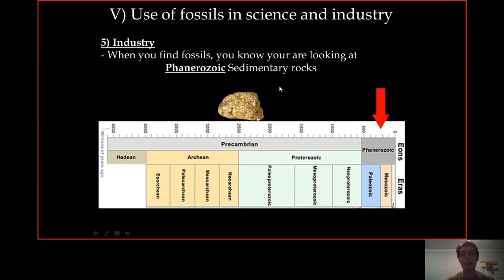So if you just found a fossil in your rock — a seashell, for example — you know you're most likely looking at the Phanerozoic. Which means you won't find that very sweet gold nugget. Because in South Africa particularly, and overall in the world, gold nuggets are usually associated with very, very old Pre-Cambrian rocks — at least 2 billion years old. So if you find a fossil, you already know you have very little chance to find gold.